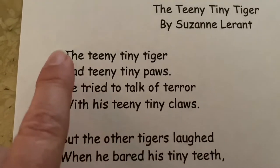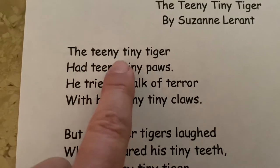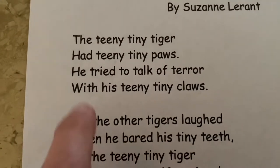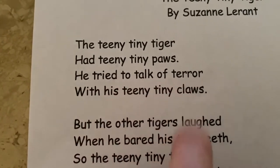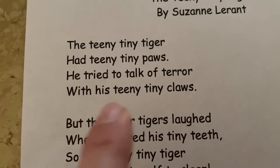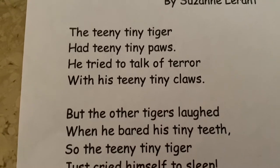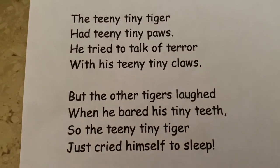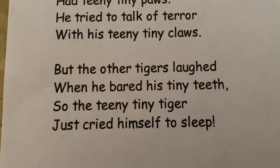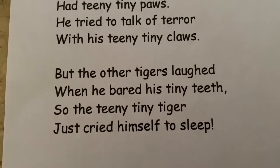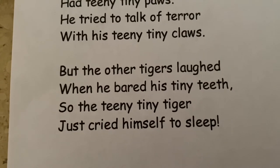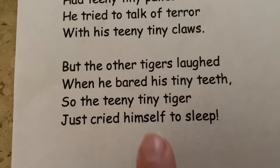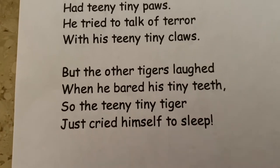So take a look — let's see what this is all about. This is about a little teeny tiny tiger, and it talked about his paws and how teeny tiny they were. It says he tried to talk of terror, meaning he tried to act really tough. He put out his teeny tiny claws and said, look how tough I am. But the other tigers laughed when he bared his tiny teeth. Baring means to show — so he showed his tiny teeth, but the other tigers laughed at his teeny tiny claws and his teeny tiny teeth.